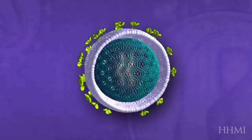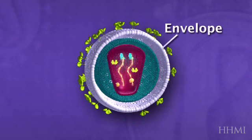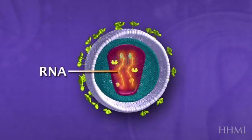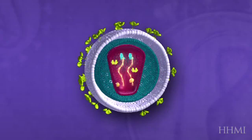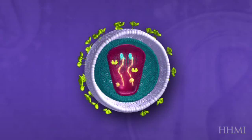This is HIV. It's a typical retrovirus, meaning that it has an outer envelope, and in the center it has two copies of RNA, as well as an enzyme shown in blue that's reverse transcriptase, which will ultimately turn that RNA into DNA.